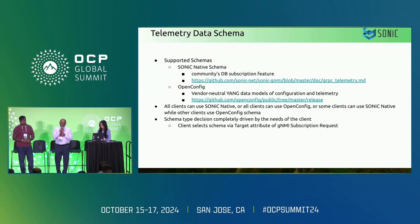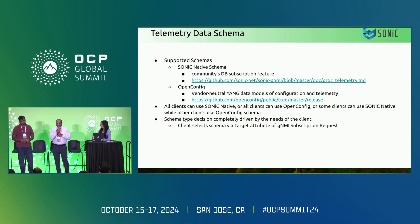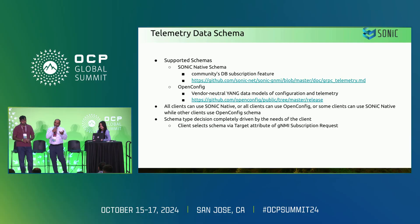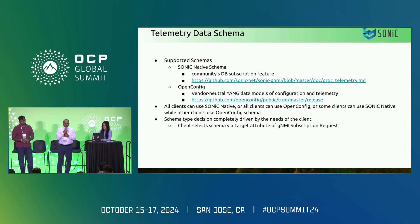We have two different types of schema supported in the GNMI server. We have the sonic-native schema wherein the Redis DB format data can be streamed out, which was already there. Now, with added support, OpenConfig data can also be streamed out. A combination of both is also supported in the server. Some clients can ask for sonic-native schema, some clients can ask only for OpenConfig, and the same GNMI server can respond to both requests. The schema type decision is completely with the client, i.e., the controller.